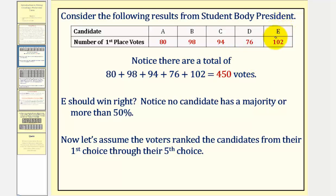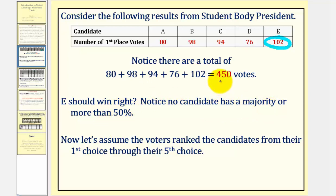Since candidate E has the most votes at 102, E should win, right? Well, notice that in order to have a majority of more than 50 percent, somebody would have to have more than 225 votes. And notice that no candidate here even comes close to having a majority of the votes.